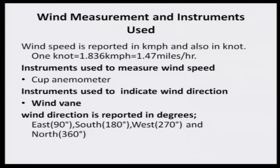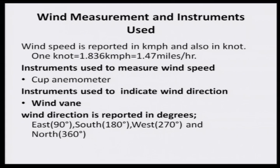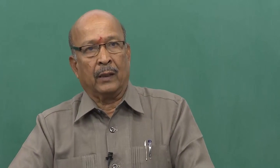Wind direction is very important — where the wind comes from and where it goes. The windward direction is where the wind comes from; the leeward direction is where it goes. This is expressed in degrees: east is 90°, south is 180°, west is 270°, and north is 360°. For plant protection spraying, you should not move against the wind direction but should go through the leeward direction to avoid chemical drift and ensure input efficiency.